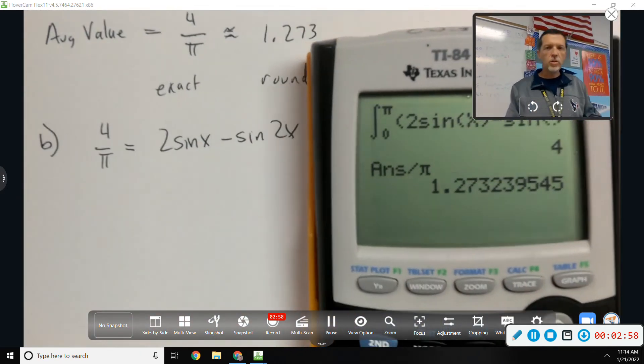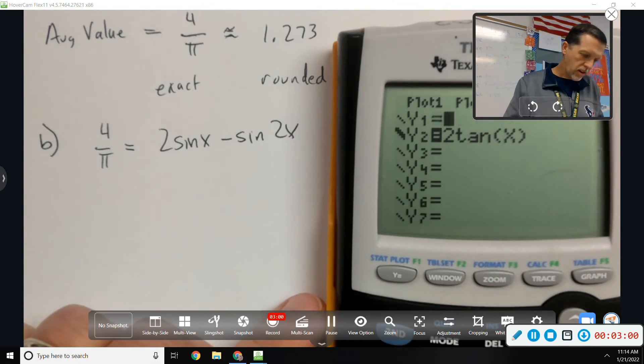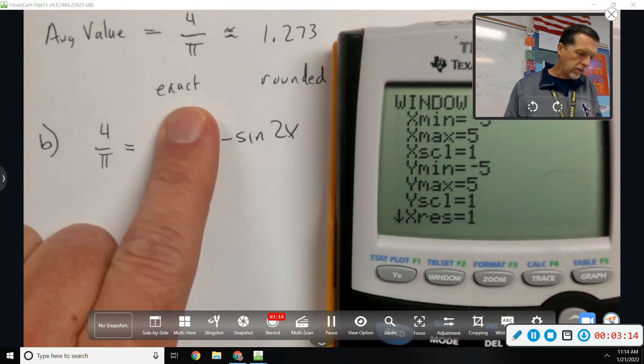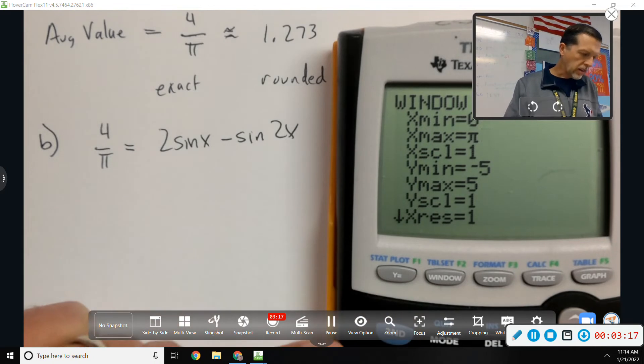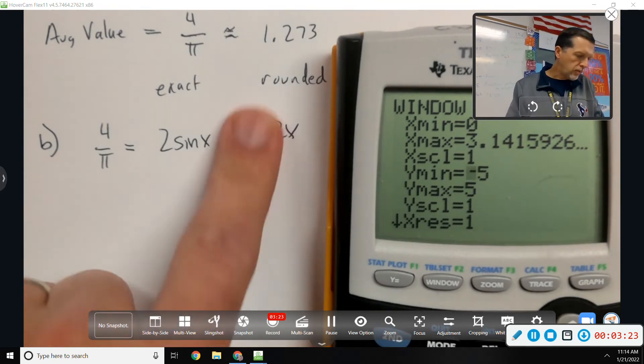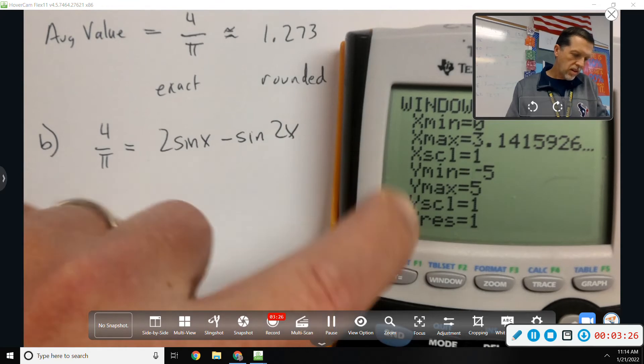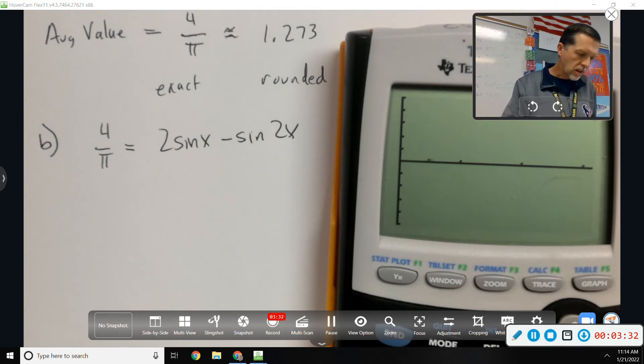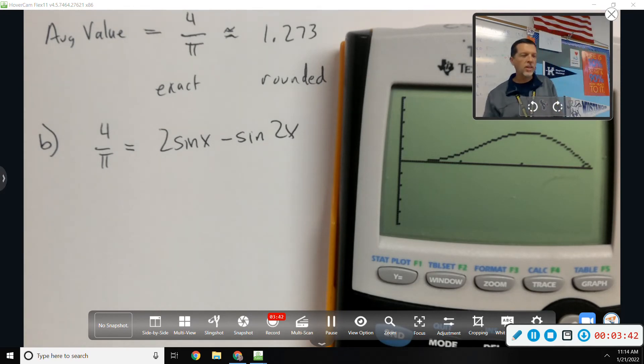I'm going to graph two sine x minus sine 2x. And really, I only care about going from zero to pi, because I know my answer should be in there somewhere. I want to know where it's equal to 1.27, so as long as 1.27 is in the y window, I should be able to see it.